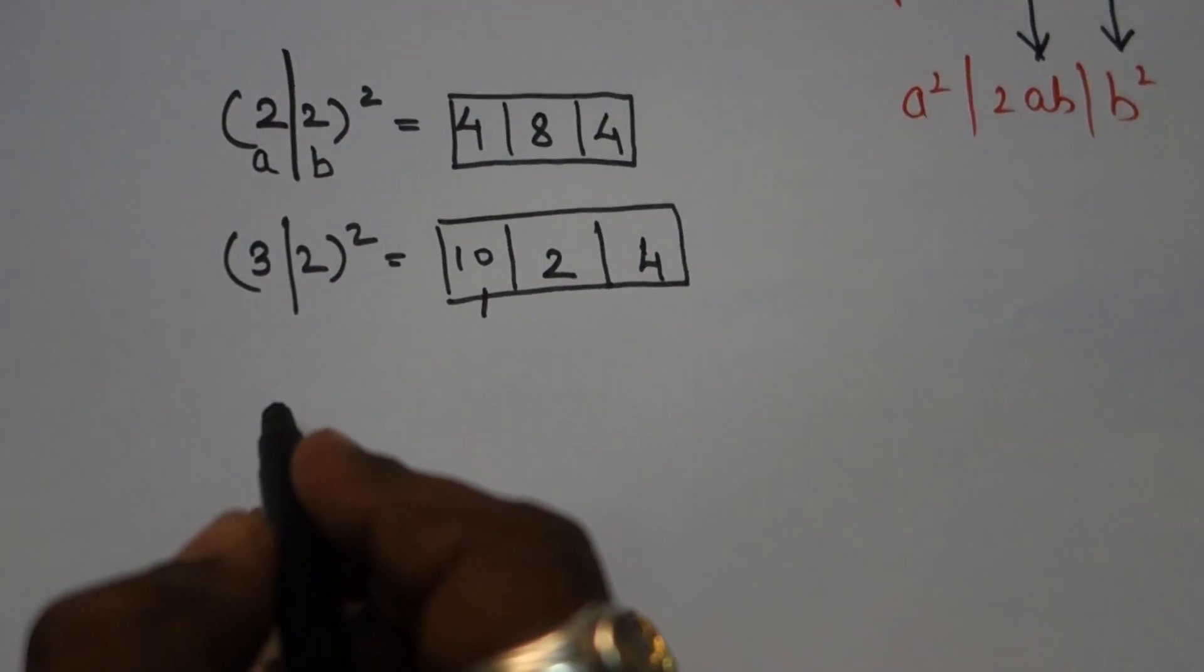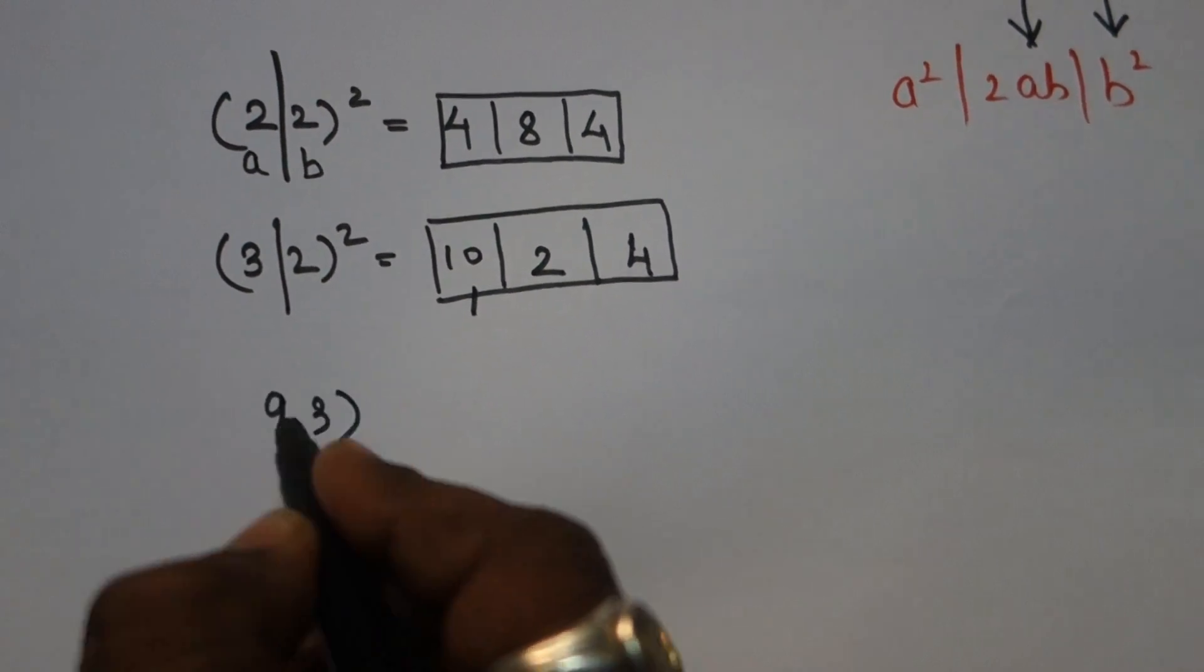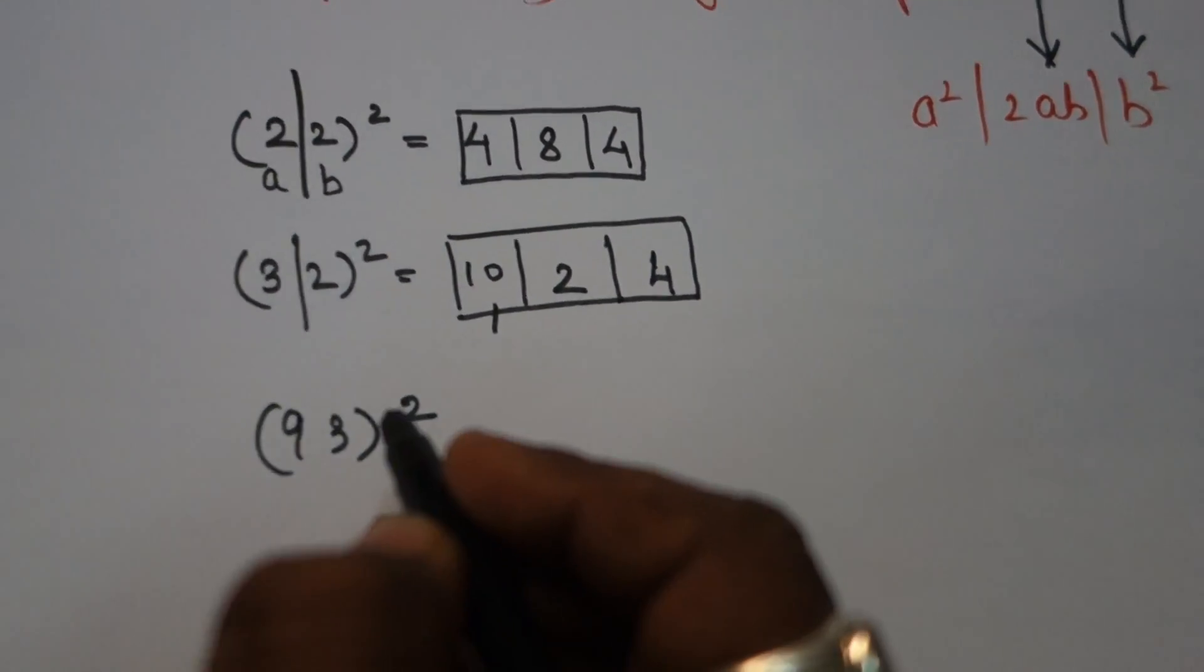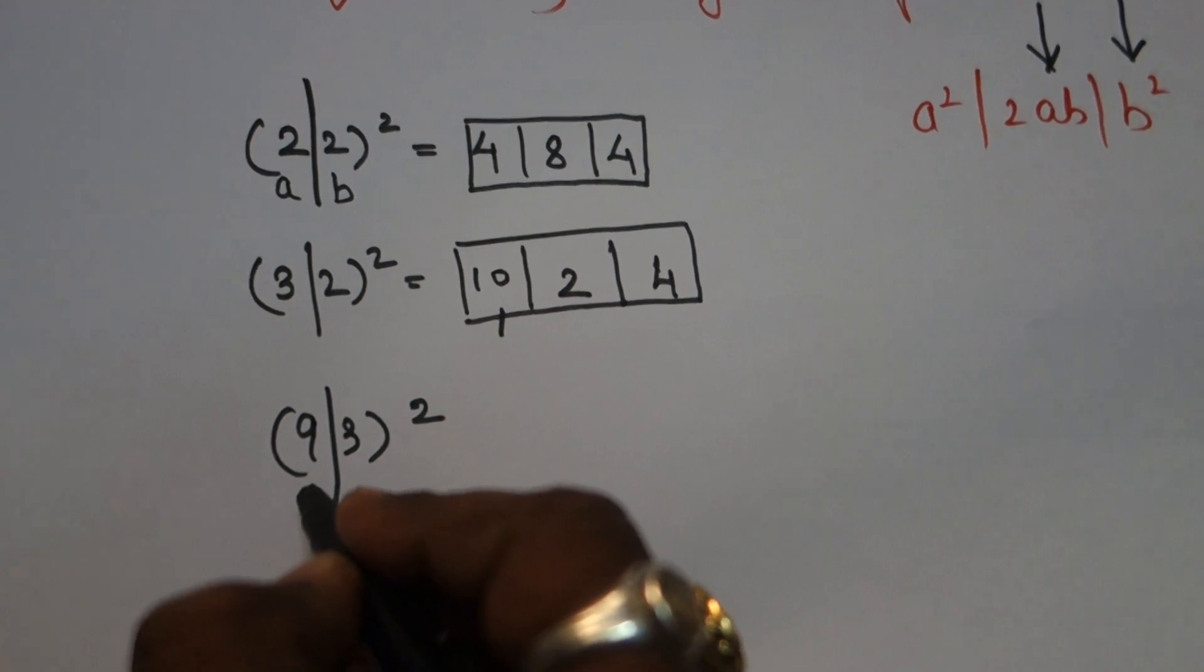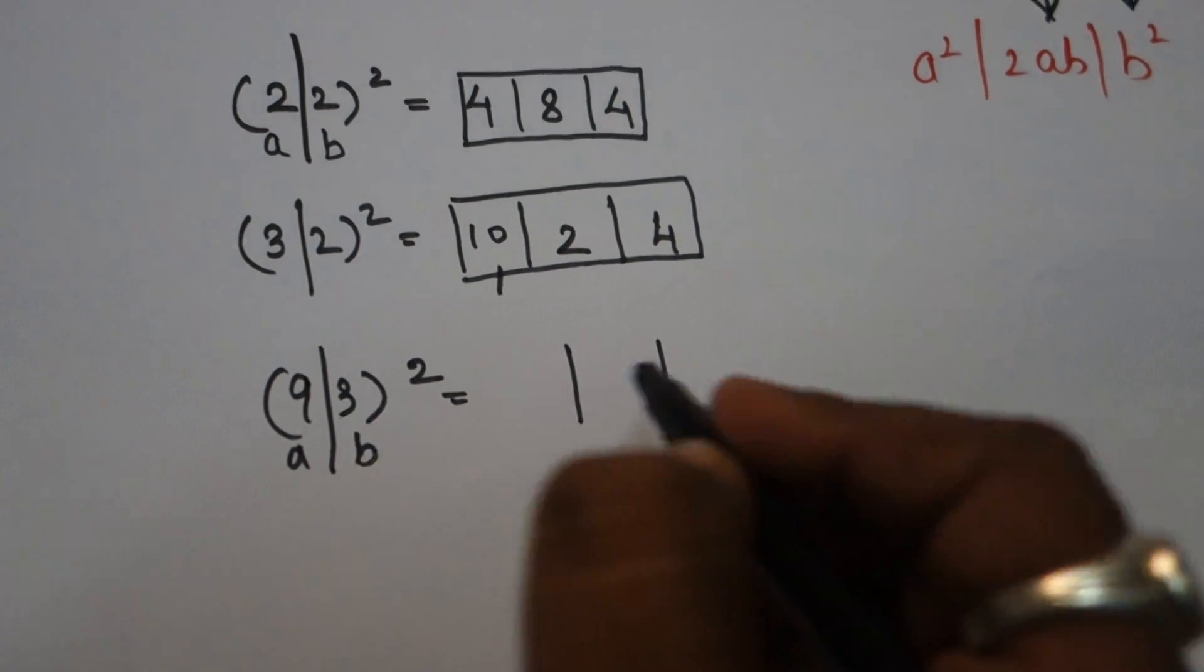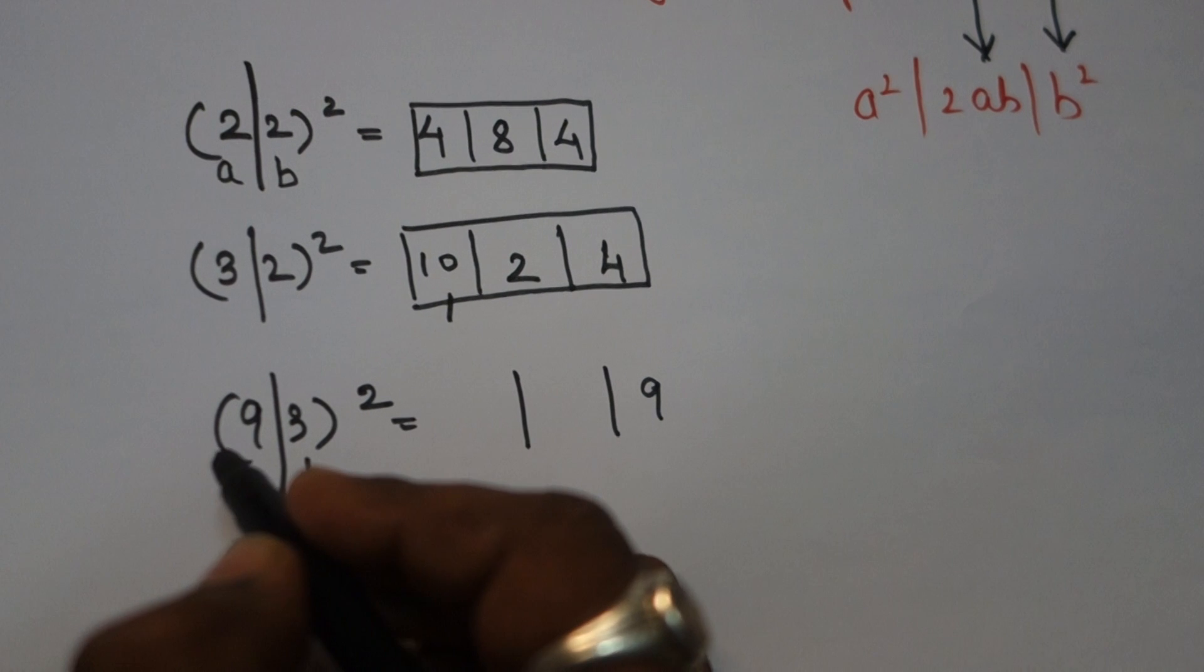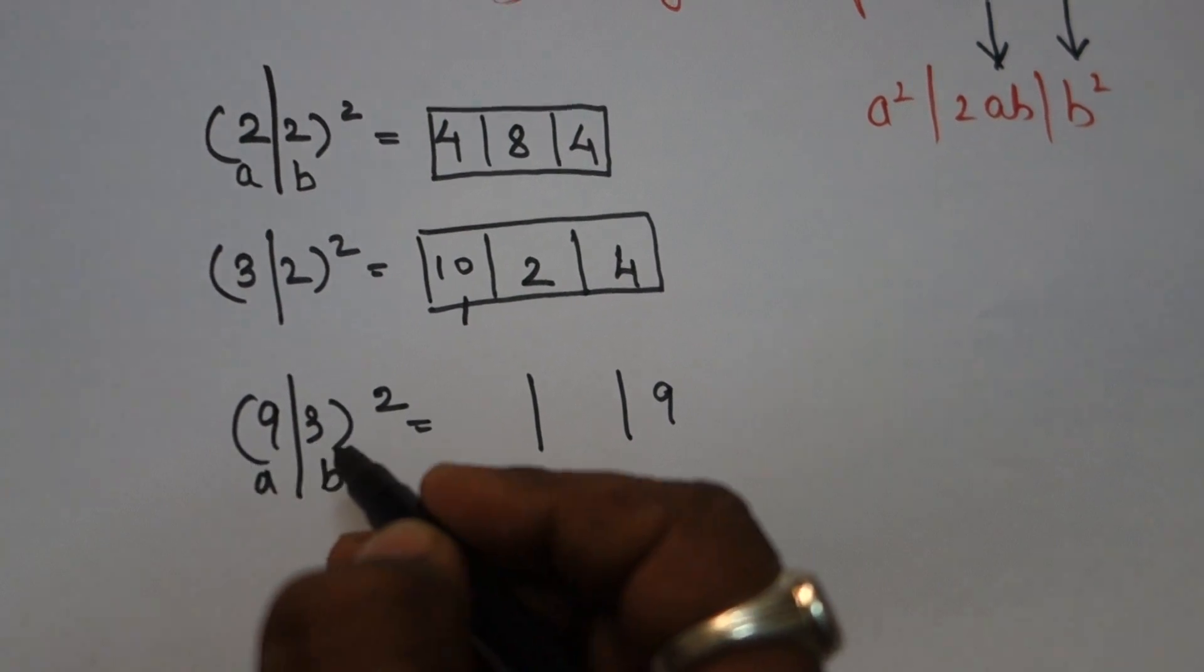Let's check one big number: 93. Break this number: 9 as a and 3 as b. 3² = 9. Step 2: 2ab. 2×9 = 18, 18×3 = 54.